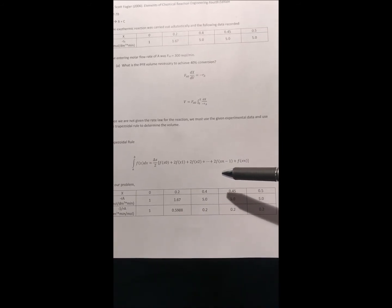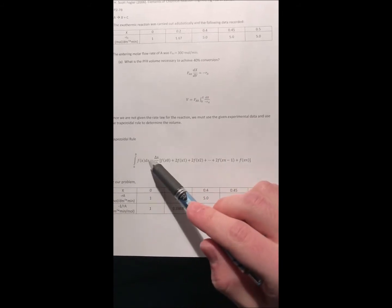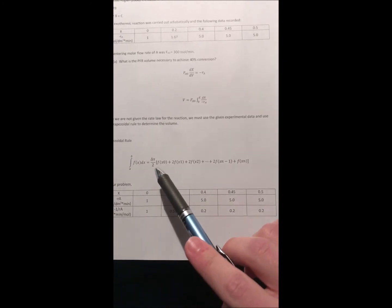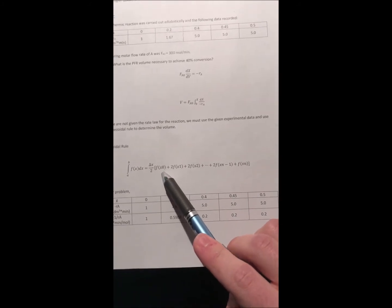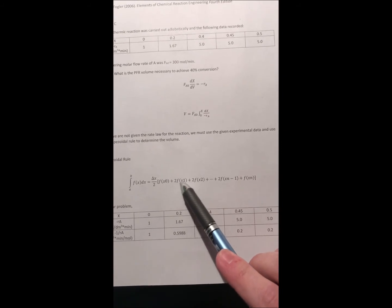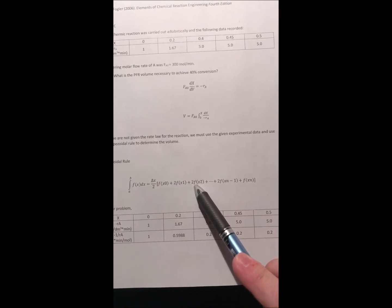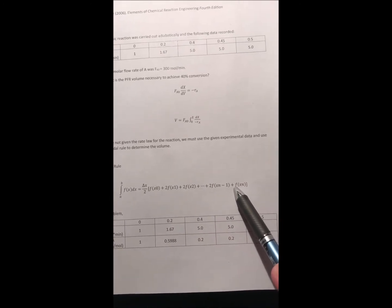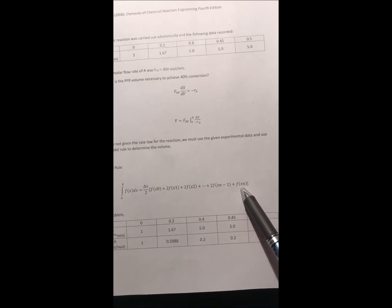So here's the trapezoidal rule. This tells us that we can replace the integral with this equation right here. Delta x over 2 times the function of your x0 plus 2 times the function of your x1 plus 2 times the function of your x2. On and on until you get to the final term where you don't multiply it by 2 but you're adding the function of x of your last term.